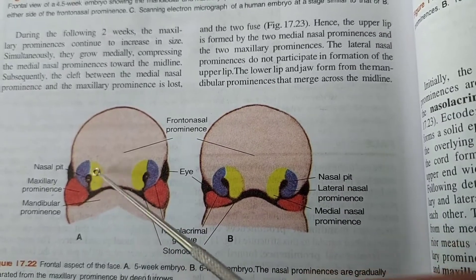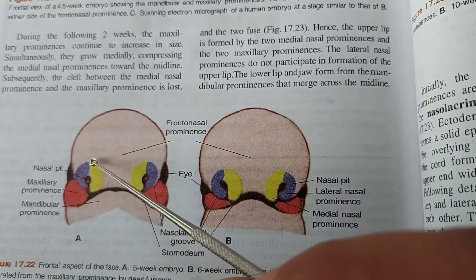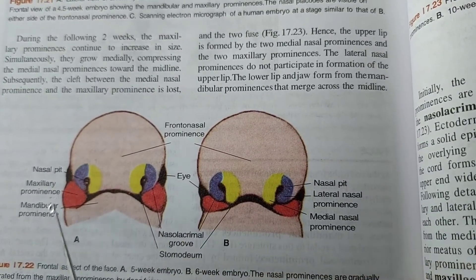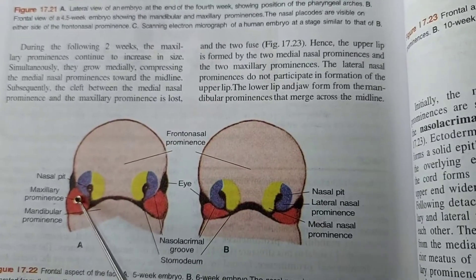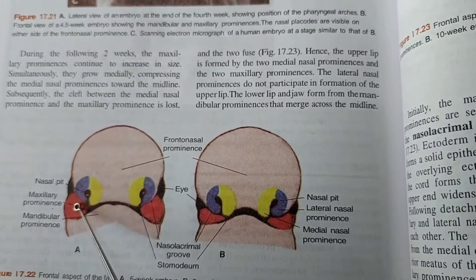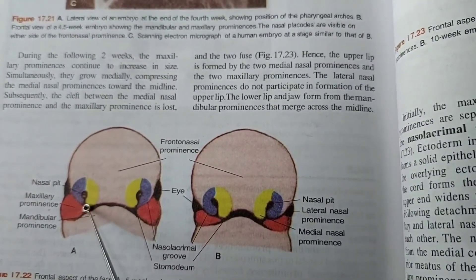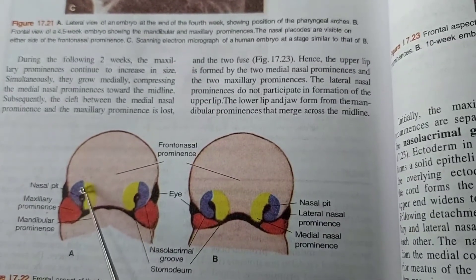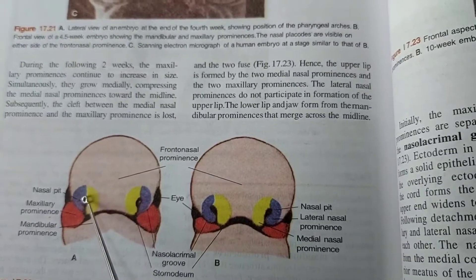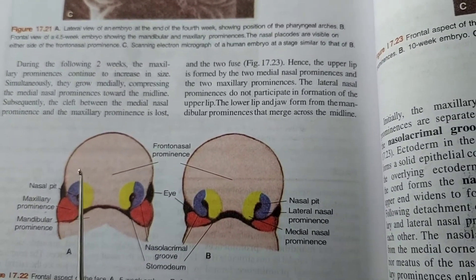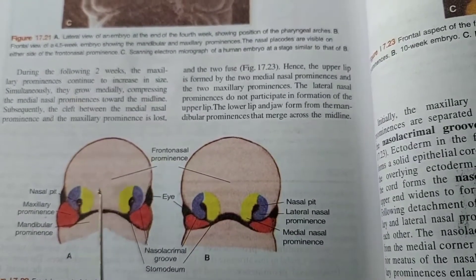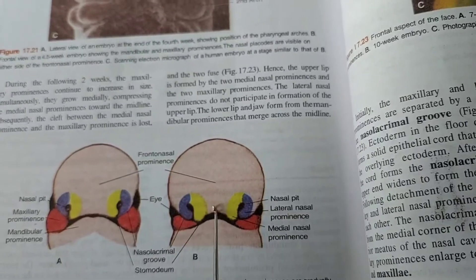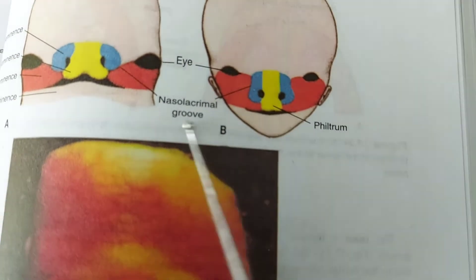For descriptive purposes, the nasal process or nasal prominence is divided into a lateral half and a medial half. The nasal pit finally turns into the nasal sac. With time, the two medial nasal processes come closer and closer, and finally these medial nasal processes fuse with each other.